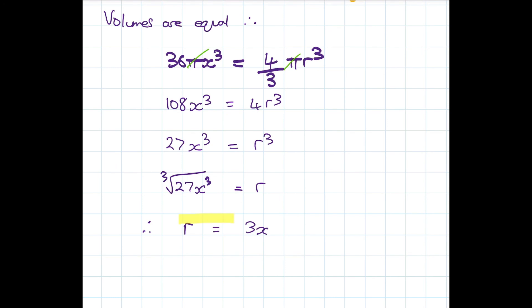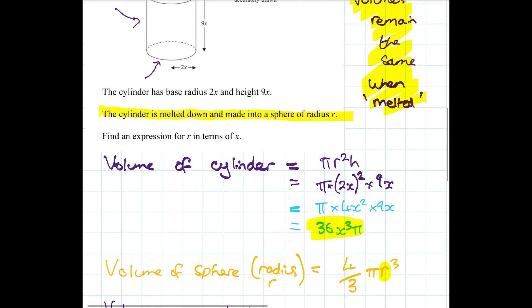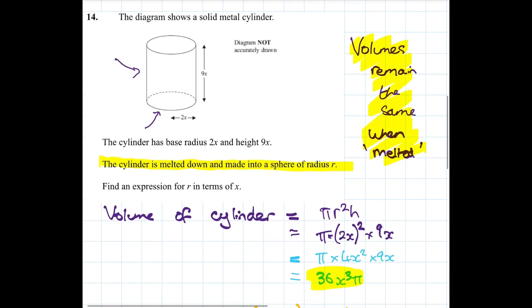So this is our final answer, so the radius of the sphere is 3x. So I hope you've enjoyed this video, it's a really nice problem and it gets you thinking about what's going to actually happen if we start twisting and stretching shapes.